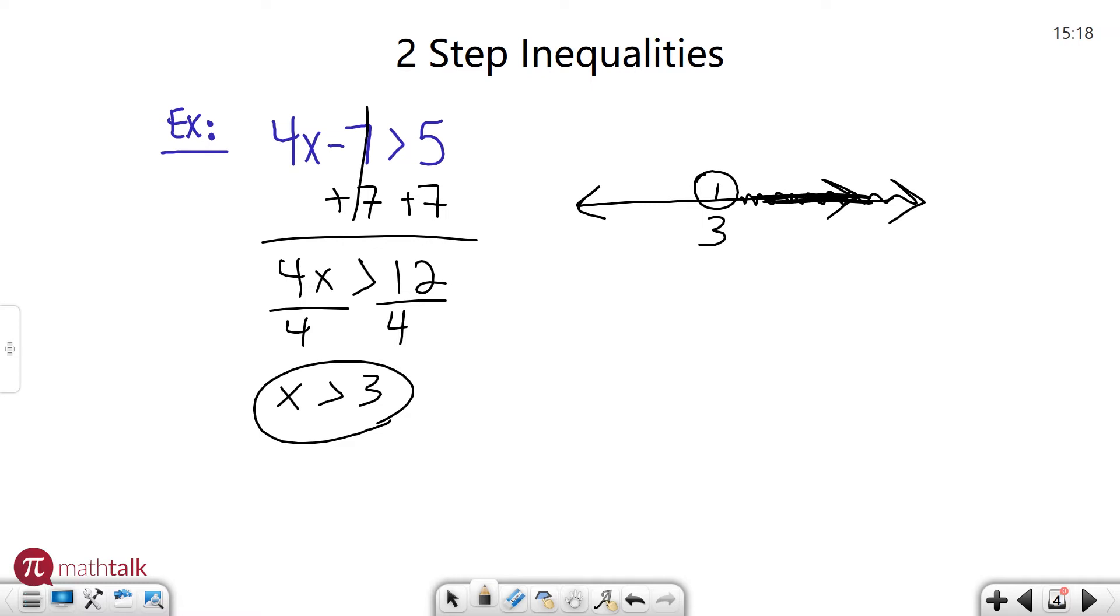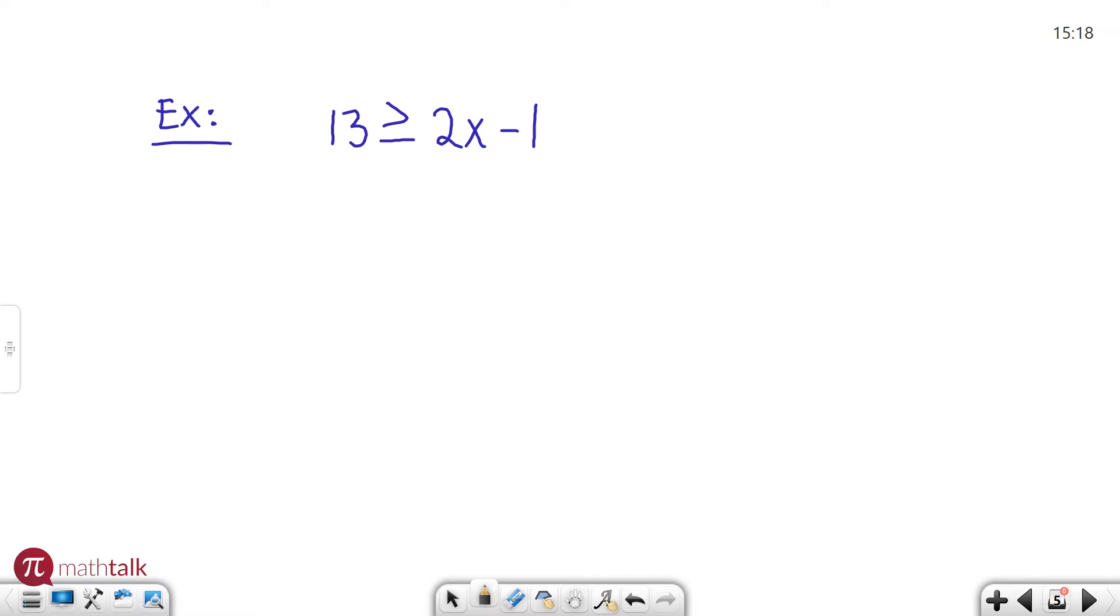So let's look at one more example. 13 is greater than or equal to 2x minus 1. So again I want to isolate my variable. So to do that I'm going to get rid of this 1 by adding it to both sides. It goes away over here. 13 plus 1 is 14 greater than or equal to 2x. Now I'm going to get 2x to just be plain old x. So I'm going to divide by 2, divide by 2 and I get 7 is greater than or equal to x.